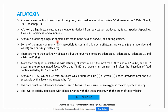Aflatoxin-producing fungi can contaminate crops whether in the fields, at the time of harvest, or during storage. Some of the more common crops susceptible to aflatoxin contamination are cereals like maize, rice and wheat, and tree nuts like pistachio. There are more than 20 known aflatoxins, but the four main ones are aflatoxin B1, B2, G1 and G2.